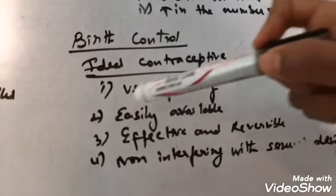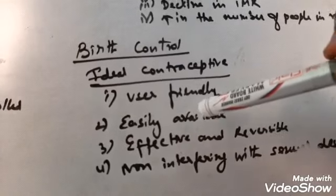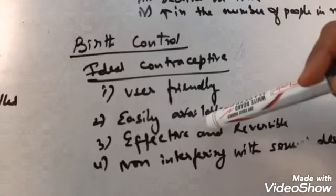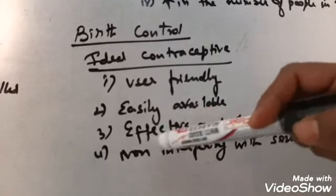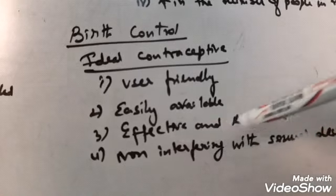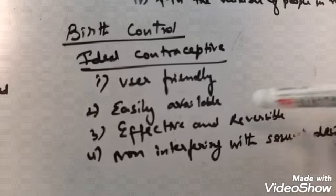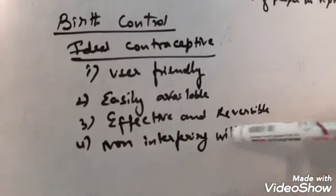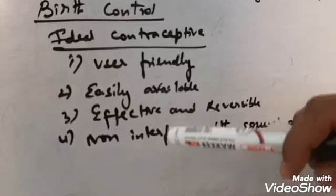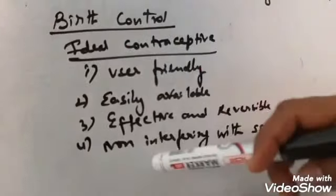The first point is user-friendly. The contraceptive should be user-friendly, that is, the person who is using it should be friendly with it, means he can easily use it. Second is easily available, easily accessible. Third is effective and reversible, that is, it should be effective for contraception and reversible. And fourth is non-interfering with the sexual desire of the person. That means the normal biological process should not be interfering because of this contraceptive. These are the ideal contraceptives.